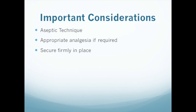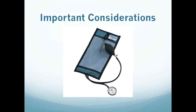Some important pre and post insertion considerations: aseptic technique to mitigate the risk of any subsequent infections; appropriate analgesia as required — in the ACT Ambulance Service we use lignocaine; make sure the IO is secured firmly in place, as once you've got that access you don't want to knock it loose. And a final point — if you are going to run fluids through the IO site, use a pressure bag with about 300ml of air, as that will ensure fluid runs thoroughly through that space.